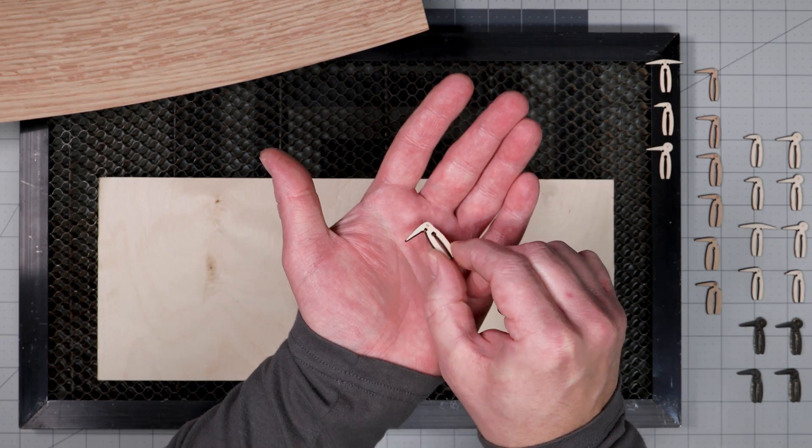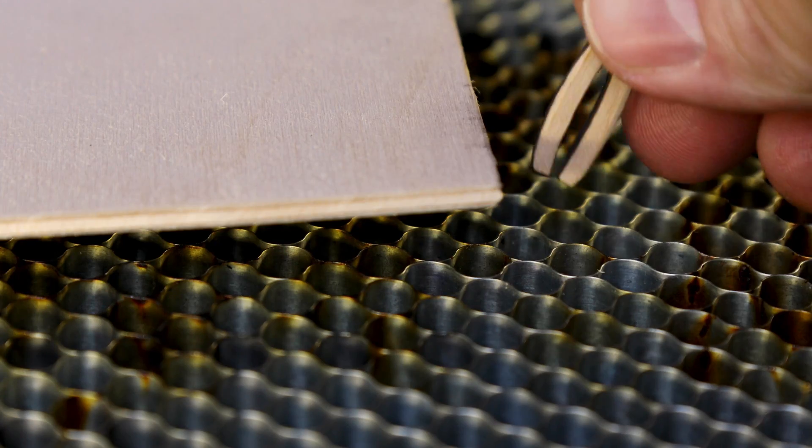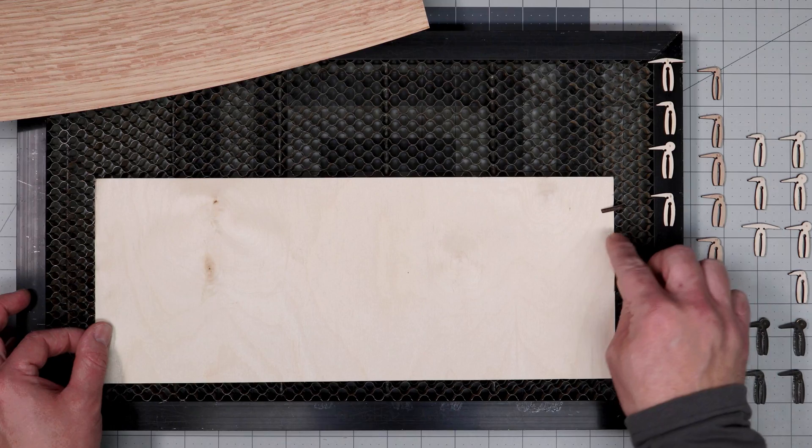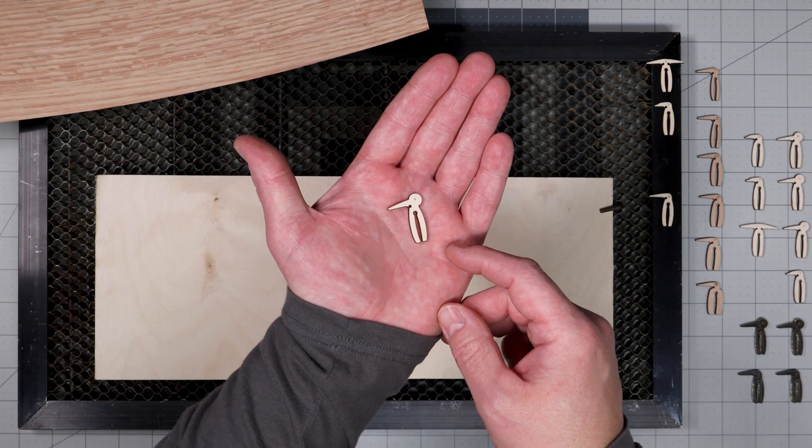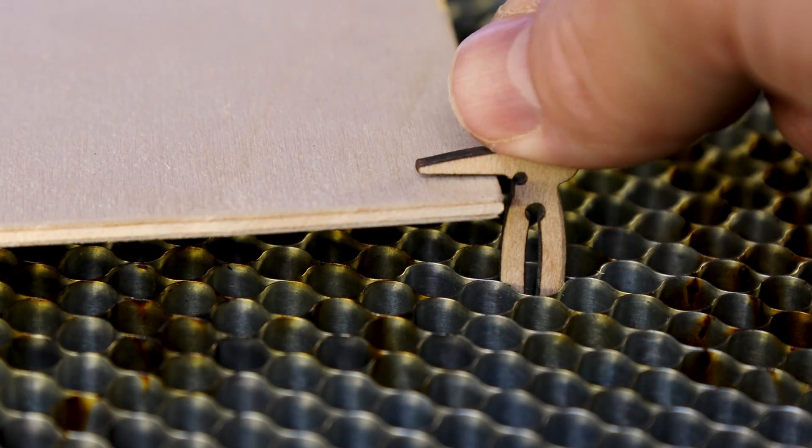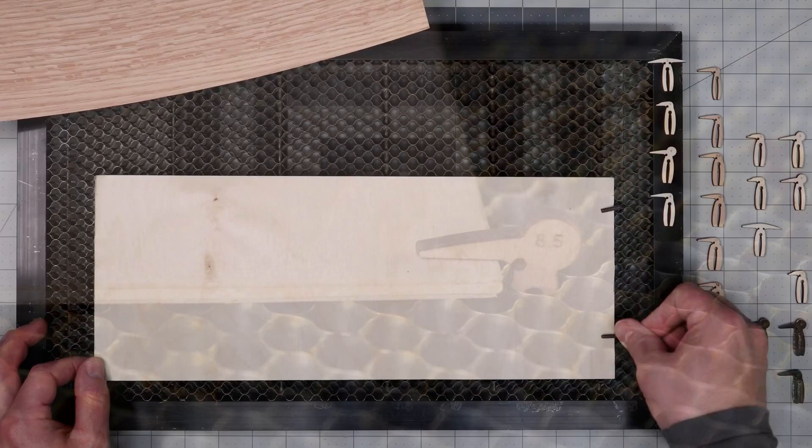First up we have the standard pin style which I made low profile enough so most laser heads would clear it. The next version is an easy pull style. It has this tab at the top which makes it easy to grab and pull out of your laser bed.